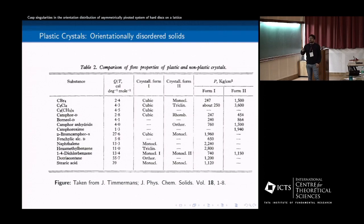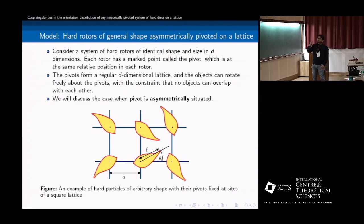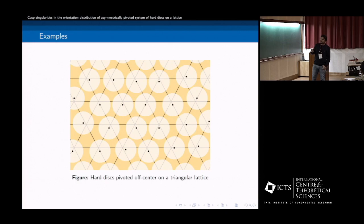So what we have done in this work is to give a minimal model of this plastic crystal. So this is, for example, consider a hard rotor of any general shape, but they're identical, and pivot point is also identical of course, and they form a lattice. The pivots are on the lattice in d dimensions. And it's a typical example of that. So it can be in any dimension on any regular lattice. So we have stated two examples. For example, this hard needles pivoted at one end on the square lattice, and this hard disk pivoted off-center on a triangular lattice.